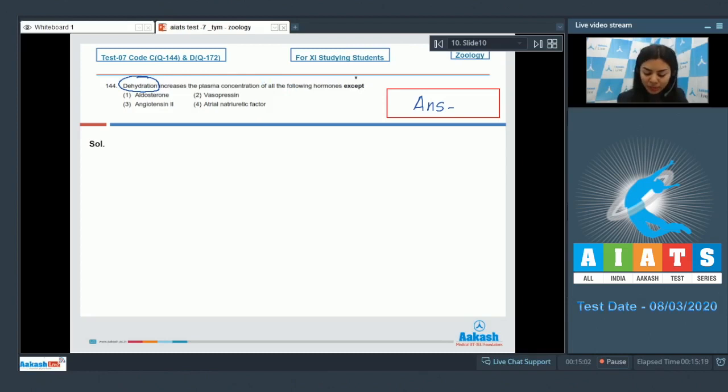Option 1, aldosterone, is a mineralocorticoid and its main function is water conservation. It promotes the reabsorption of sodium ions, along with which water would also get reabsorbed. So this would increase in dehydration.